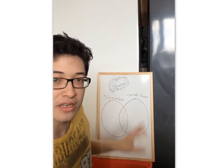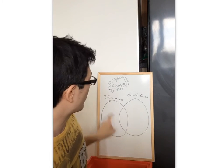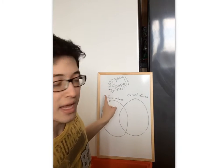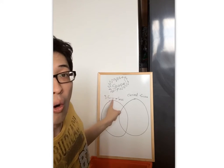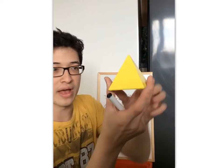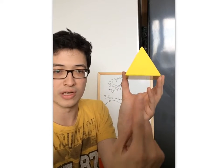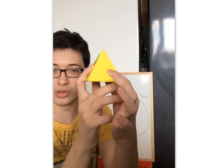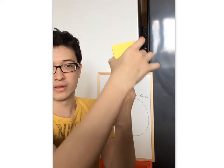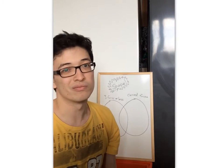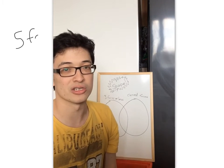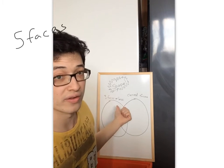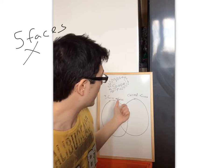So looking at our Venn diagram, we need to decide where this shape is going to go. Well, first of all, does it have 3 faces or less? Let's count them. We have got... We're going to have to use our finger here. 1, 2, 3, 4, 5. So it can't go in that circle because it's got more than 3 faces.